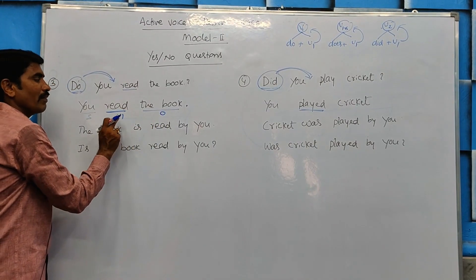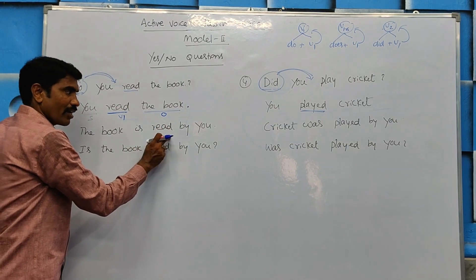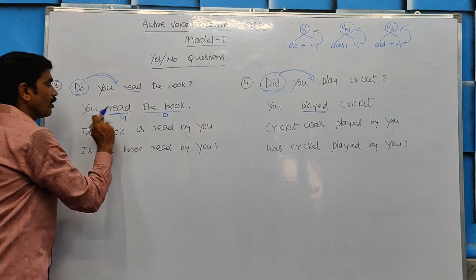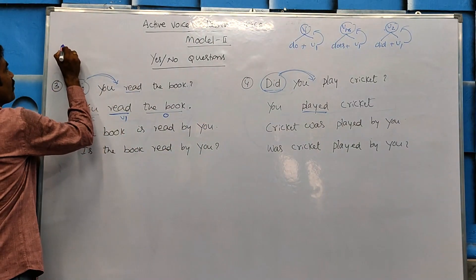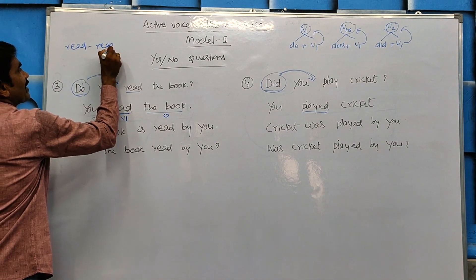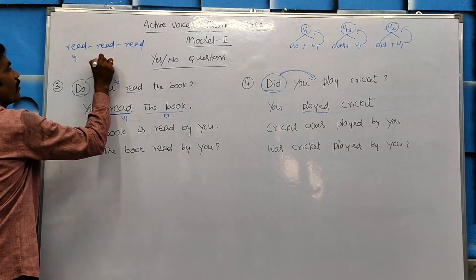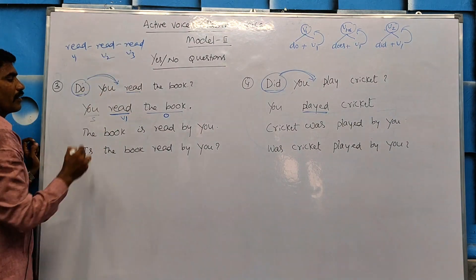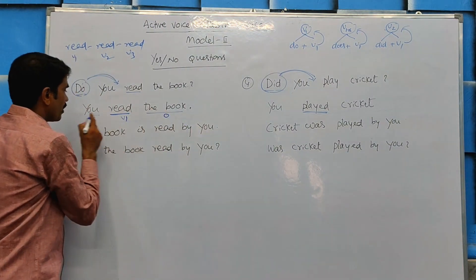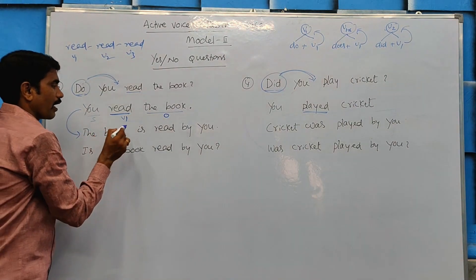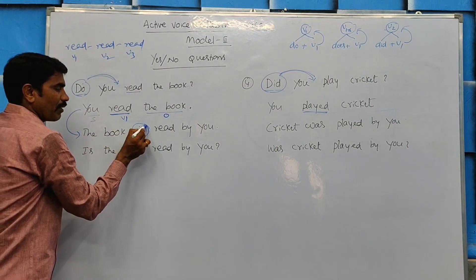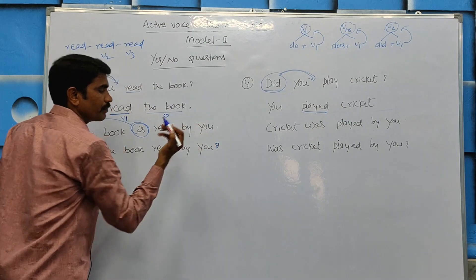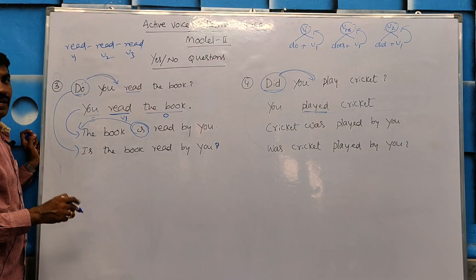We can express V3. Read — the three forms are: read, read, read. We can reveal that in the spelling the process is the same: read, read, read by you. Read has three forms: V1, V2, V3 — all are 'read.' So the book is read by you. In the passive answer, the book is read by you.